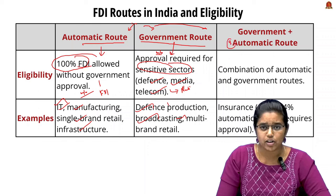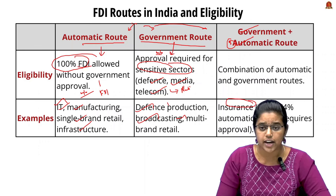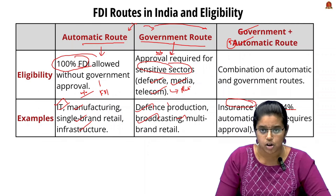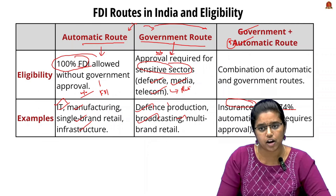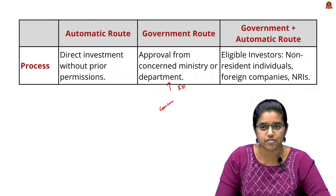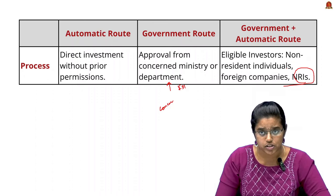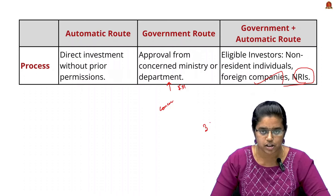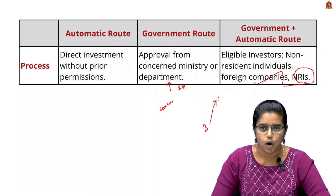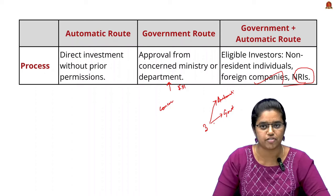The third route is a combination of automatic and government routes. For example, in the insurance sector, up to 74% FDI can be established through the automatic route, and above 74% requires government approval. This is called the government-plus-automatic route and is applicable to eligible investors such as NRIs and foreign companies. In summary, the three methods are: automatic route (no government approval needed), government route (approval required), and a combination of both.